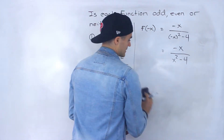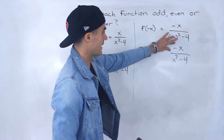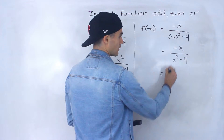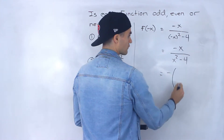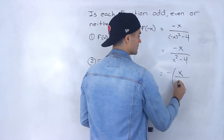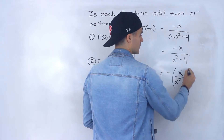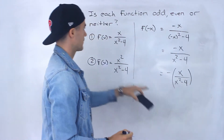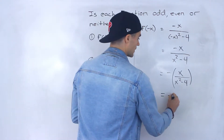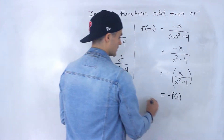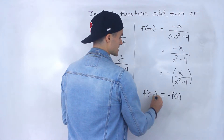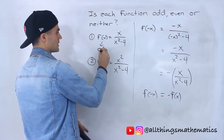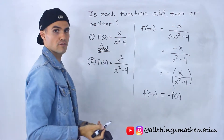Going back to this, we've got negative x over x squared minus 4. Notice we can take out this negative and put it in front of the function. And notice that x over x squared minus 4 is just f of x. So we end up with negative f of x. We've just shown f of negative x equals negative f of x, which means the function is odd.